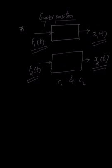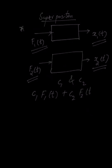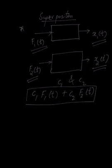I want to calculate, let's say if my excitation is c1 times f1 of t plus c2 times f2 of t. This is my excitation, this is my new f. I want to calculate what will be my x_new of t. What will be the new response?